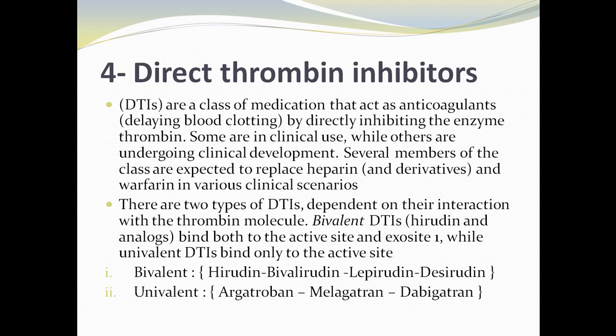Fourth type: direct thrombin inhibitors. Direct thrombin inhibitors are a class of medication that act as anticoagulants, delaying blood clotting by directly inhibiting the enzyme thrombin. Some are in clinical use while others are undergoing clinical development. Several members of the class are expected to replace heparin and derivatives and warfarin in various clinical scenarios. There are two types depending on their interaction with the thrombin molecule: bivalent direct thrombin inhibitors, which bind both to the active site and exosite, and univalent direct thrombin inhibitors, which bind only to the active site.